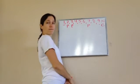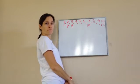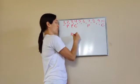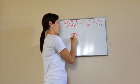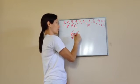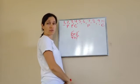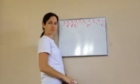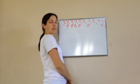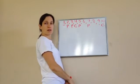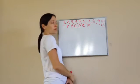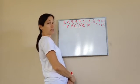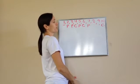4 — composite. Why? 2 times 2 and 4 times 1, so that's 1, 2, 3, 4 factors. What about 5? Prime. 6? Composite. What other numbers other than 6 times 1? 3 times 2 — very good.